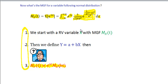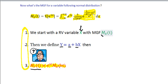Let's recall what this key result is saying. If you have a variable X and define a new variable by shifting it by a constant a and scaling it by constant b, then the moment generating function of this new variable Y will be e^(at) times the MGF of X with t replaced by bt.